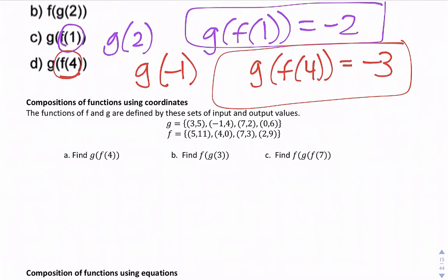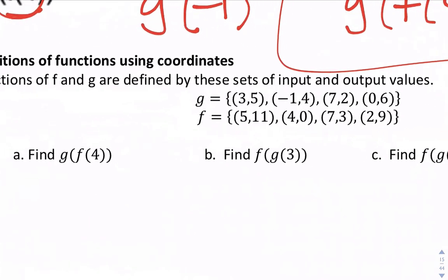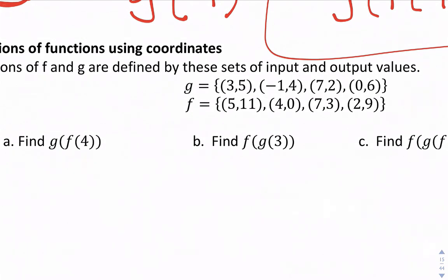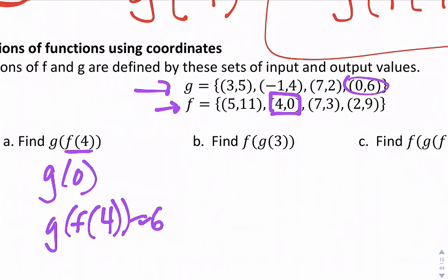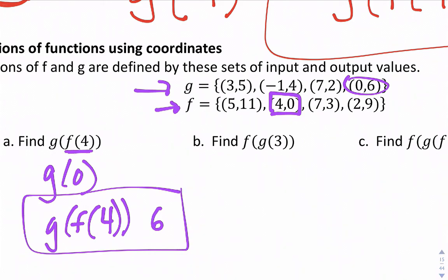You can also do composition using coordinates, which is like a table sideways. Let's find g(f(4)): in the f function, when input is 4, output is 0. Now look in the g table: when input is 0, output is 6. So g(f(4)) = 6.